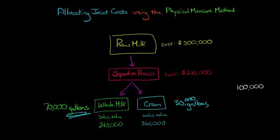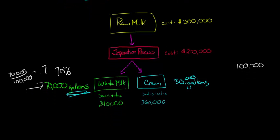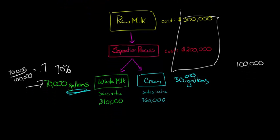Now, if we take the 70,000 for the whole milk and divide it by 100,000, that's going to give us 0.7, which is equivalent to saying that 70% of the total gallons are represented by whole milk. So what we could do to allocate these joint costs is we add up the joint costs. The 300,000 plus the 200,000 is 500,000. So there's 500,000 in total joint costs that need to be allocated.